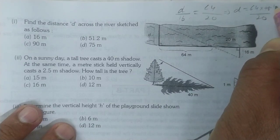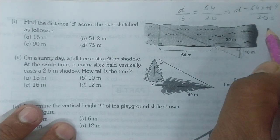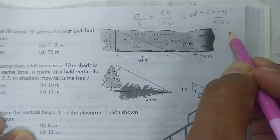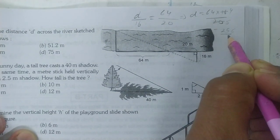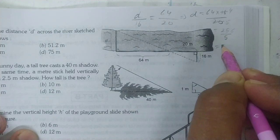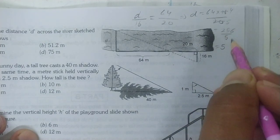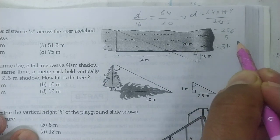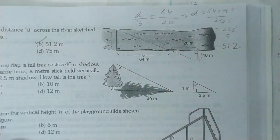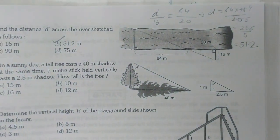After cancellation, we get 64 times 16 over 20, which equals 256 over 5. If we divide this, we get 51.2 meters. So option B is correct.